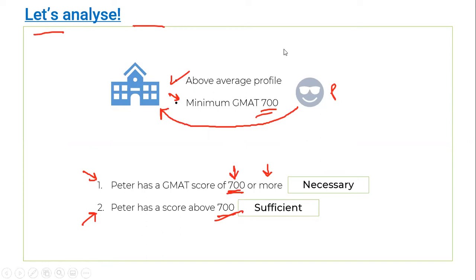If statement one does not happen — meaning Peter does not have a GMAT score of 700 or more — he doesn't get into Wharton. But if we negate statement two — Peter does not have a score above 700 — that means maybe he has exactly 700, so he still meets the minimum criteria and can still get into Wharton. The conclusion can still hold. On the other hand, if the necessary condition doesn't happen, the conclusion does not hold. So keep that in mind — and I think many of you already have an inkling of how this relates to assumptions. Let's connect the dots further.